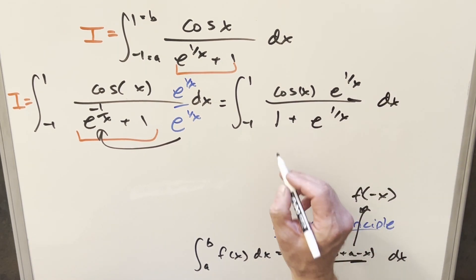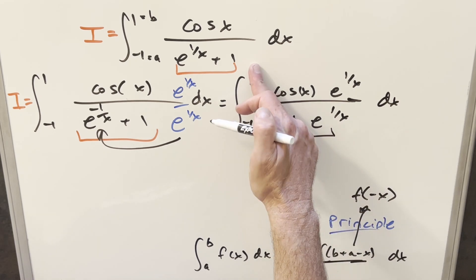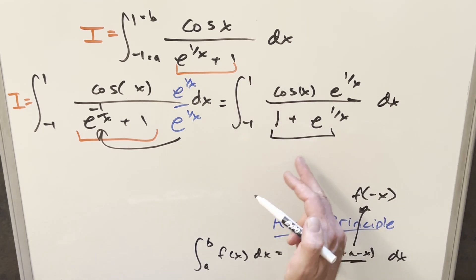And so now what happened is we have the same denominator now, just in a different order. So now I can take these two and add them together.